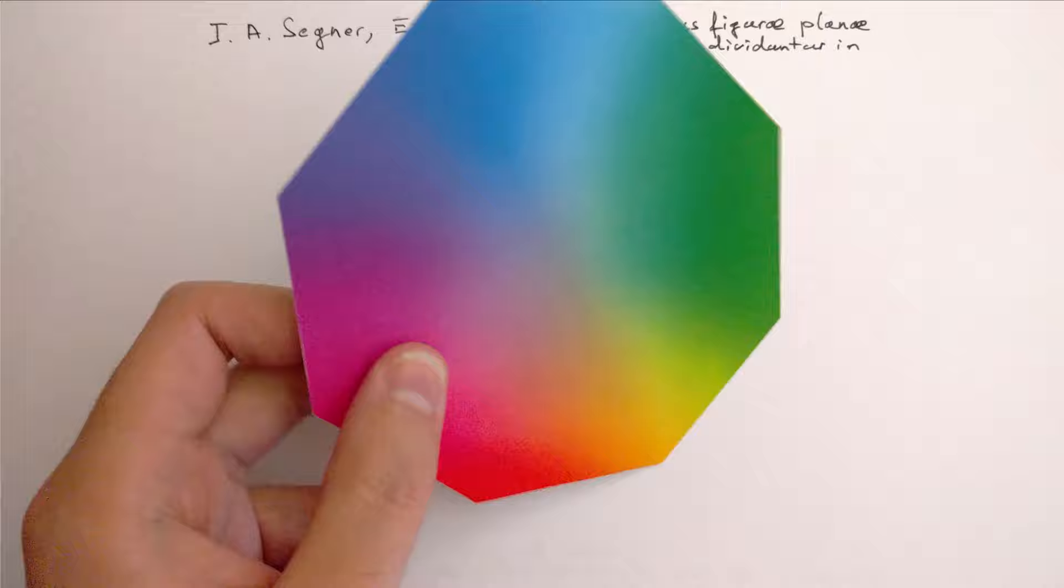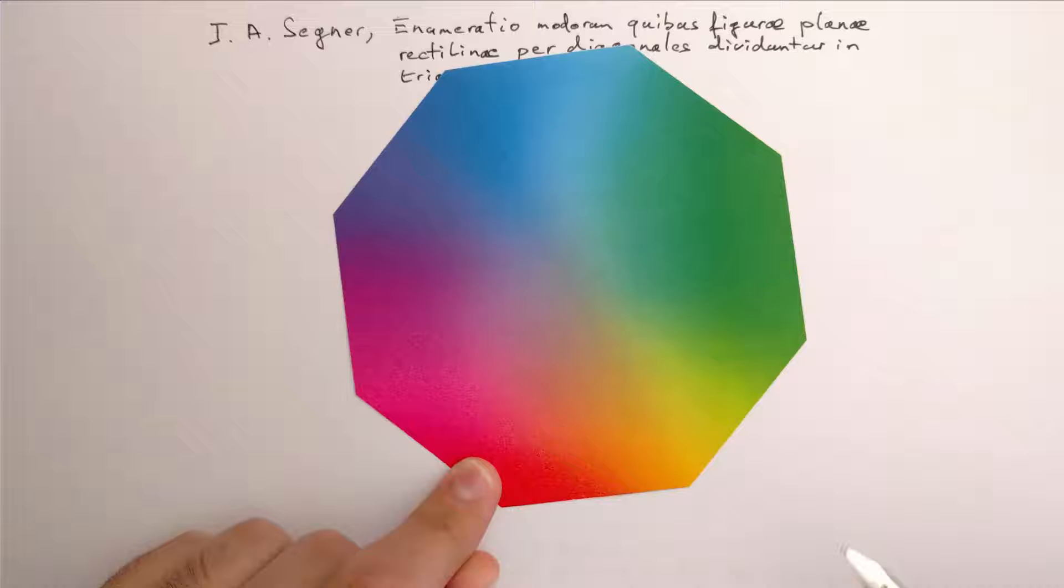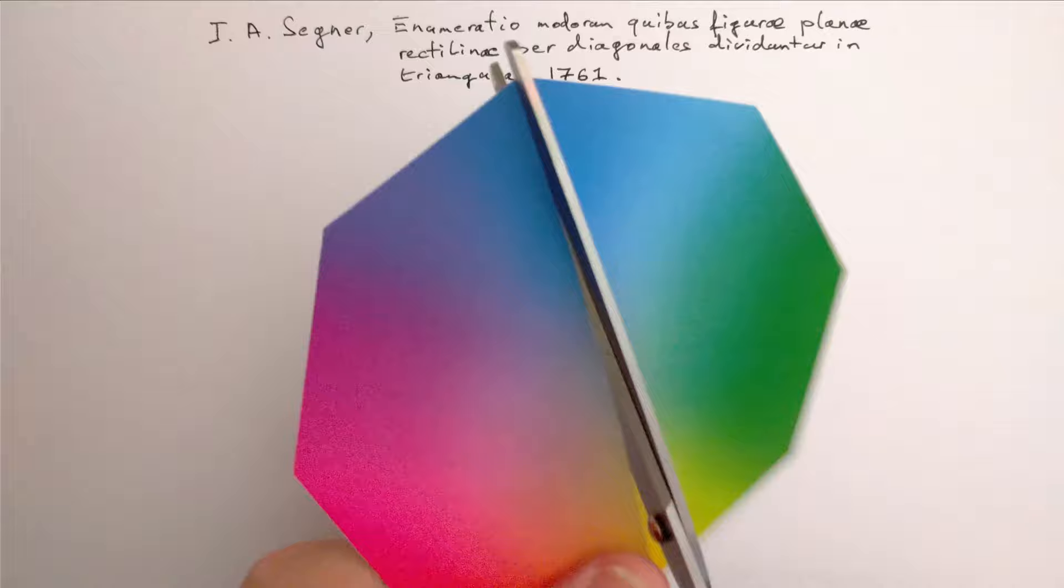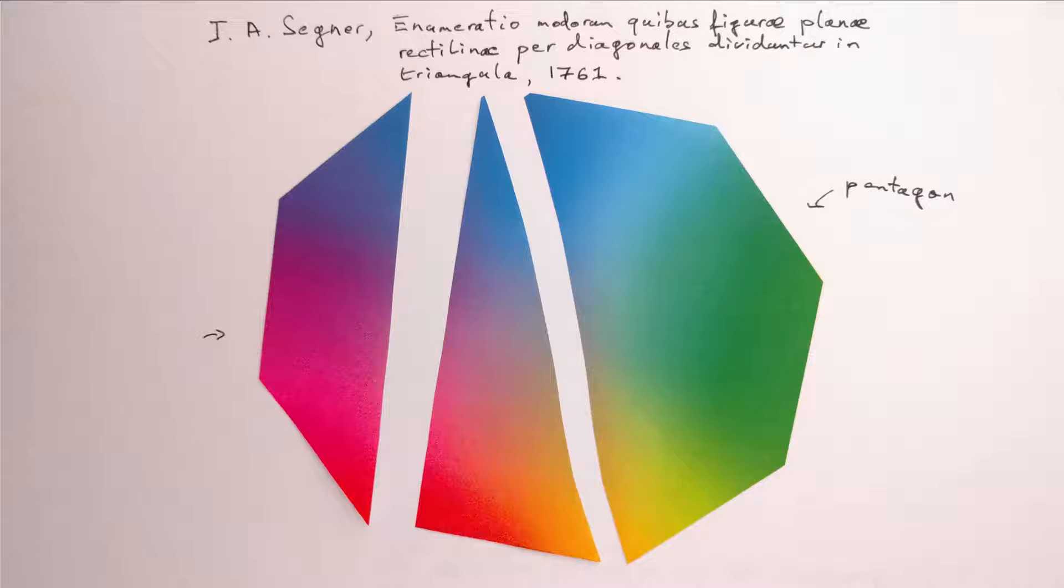Look at the edge going clockwise from the red corner. In the end, it would be an edge of a triangle. And the third corner of that triangle may be any of the other corners of our polygon. Let's say it's the blue corner. Then we have a pentagon on one side and a four-sided polygon on the other, which will both get cut into triangles.